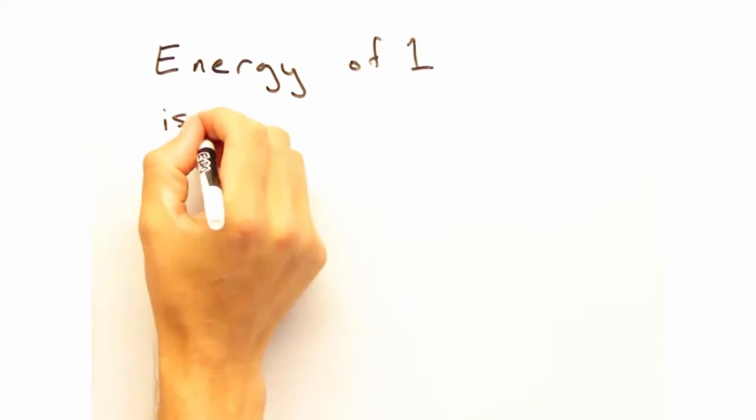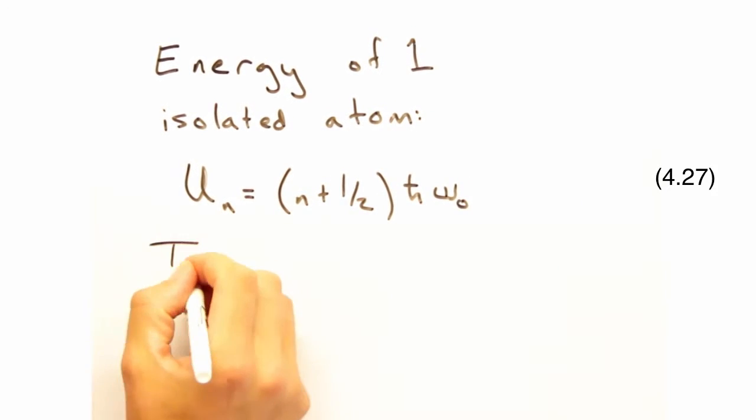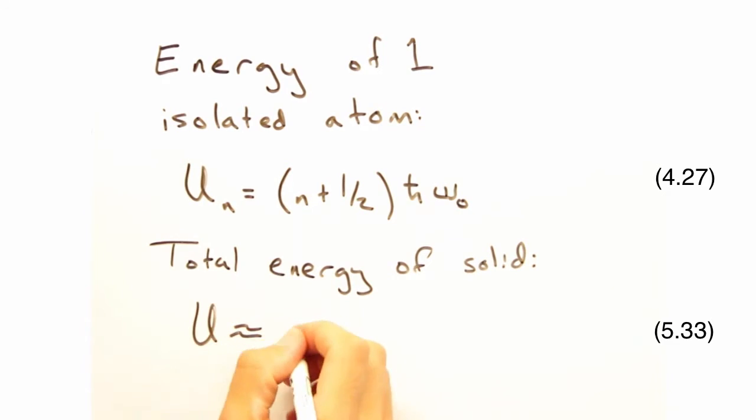Let's start with the energy of a particular mode as u sub n. Total energy of the system is then 3n times the expectation value of n h bar omega. I know n is the number of cells in the solid, but what's this 3 doing here?